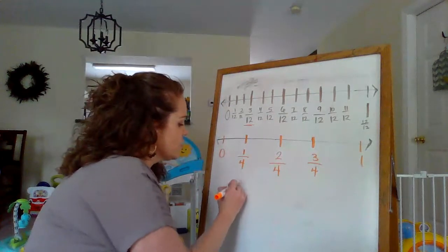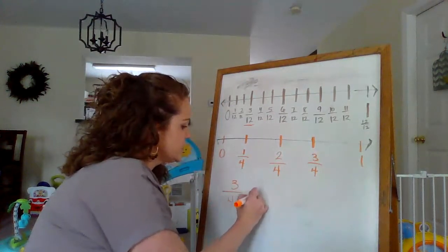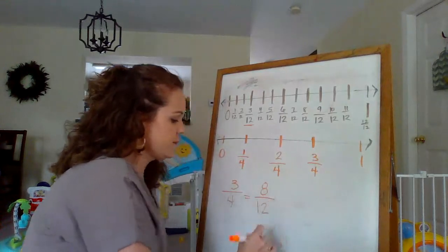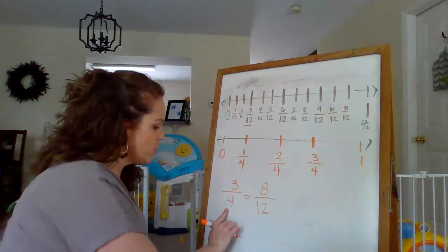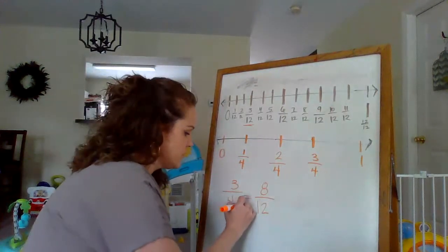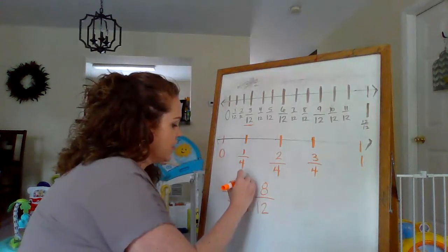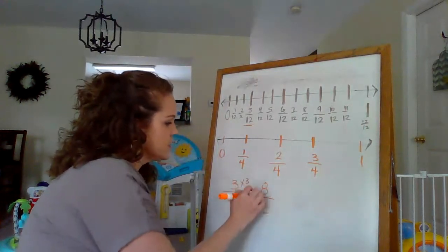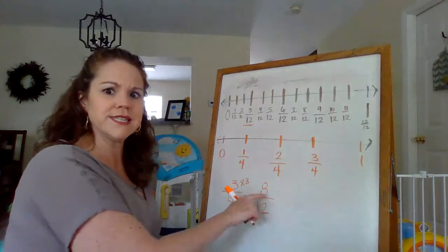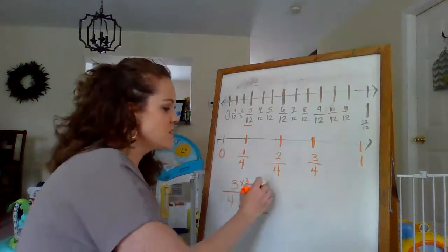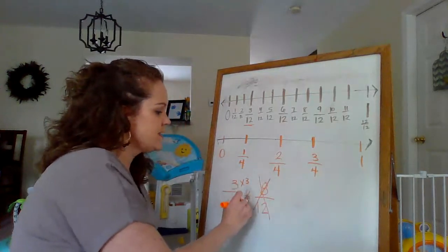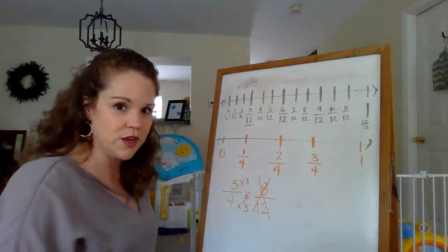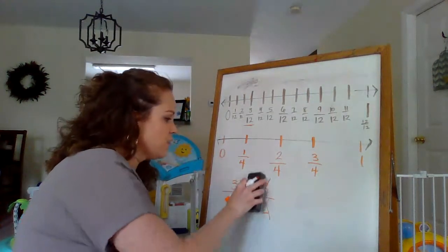So we're going to say 3 fourths is equal to 8 twelfths. Right? Okay. So I know 4 times 3 is 12. So that works. And 3 times 3 is not 8. So this does not work. These are not equivalent to each other. That did not work out for us.